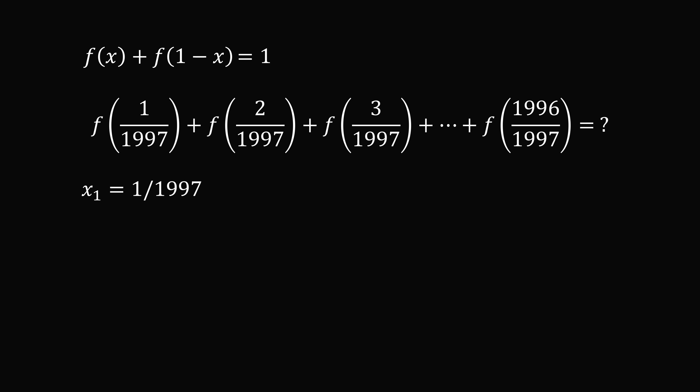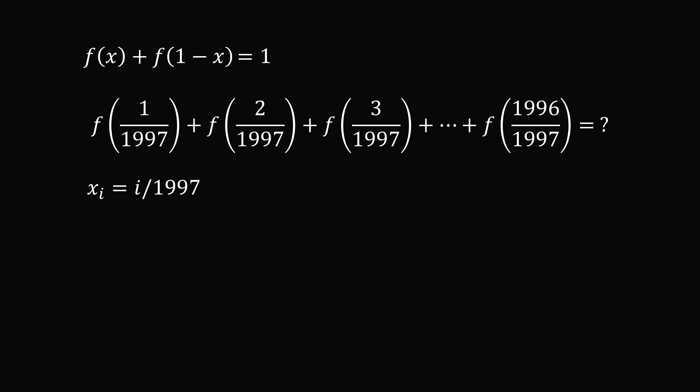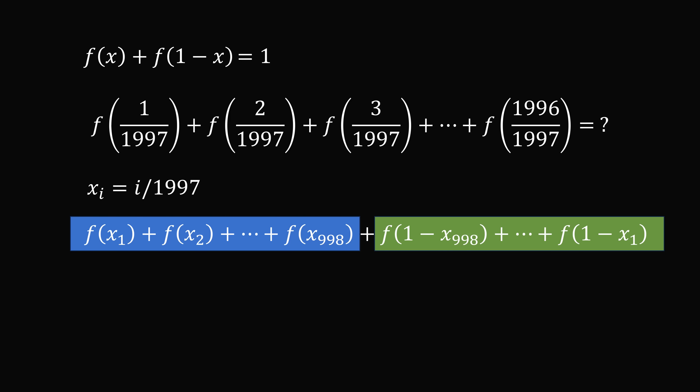Let's write x1 as 1 divided by 1997. This pairs with the very last term because 1 minus x1 is equal to 1996 divided by 1997. The second term pairs with the second to last term, and so on. Writing xi as i divided by 1997, the sum can be rewritten from f of x1 plus f of x2 all the way to the halfway point f of x998. The remaining 998 terms each pair with the first 998 terms, giving 998 pairs each equal to 1. So the answer is 998.